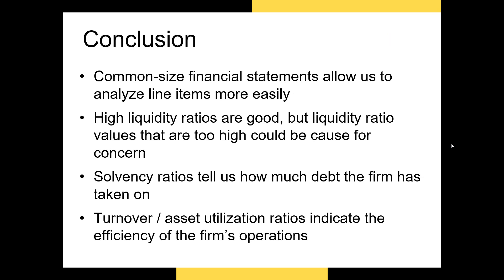So what did we just cover? We covered common-size financial statements and why they're important. We talked about liquidity ratios and whether higher numbers are better — in many cases yes, but very high liquidity ratios can be a bad thing. We also talked about solvency ratios and how to calculate them. And finally, we talked about some of the most basic turnover or asset utilization ratios in finance.